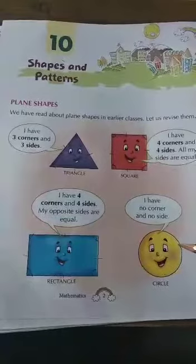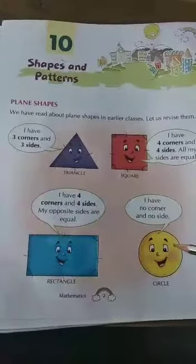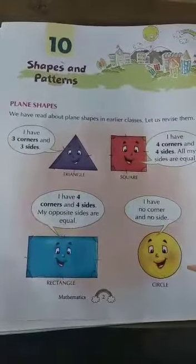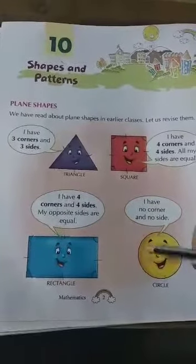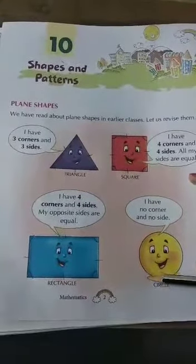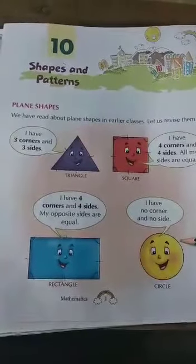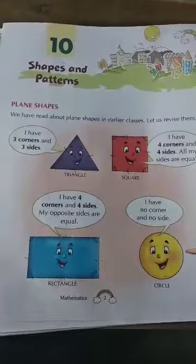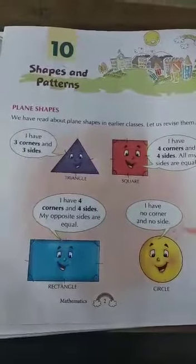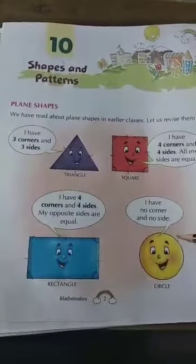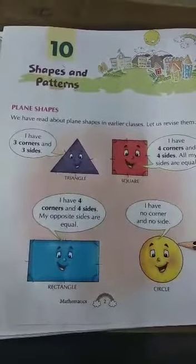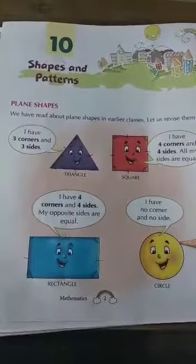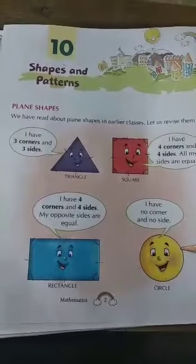Now see the next one — this is a circle. A circle has no corner and no side. See here, students — there is no corner and no side. So a circle has no corner and no side. I hope you have understood.